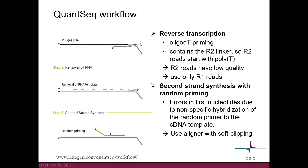We start with polyA RNA and begin by reverse transcription using oligo-dT priming. This primer contains the R2 linker, so R2 starts with polyT and hence we don't use them. The next step is to remove the RNA template, and then we perform second strand synthesis using random primers. There can be errors in the first nucleotides due to nonspecific hybridization.